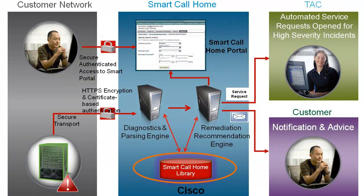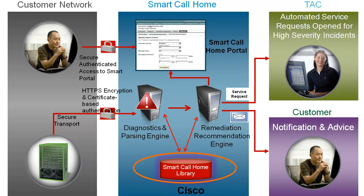Now let's take a quick look at the path that a Smart Call Home Alert takes. First, the device performs proactive diagnostics on itself and determines that something is wrong. The alert is passed on to the diagnostics and parsing engine, which pulls the log files and show commands that an engineer may need to understand what's going on with the device.